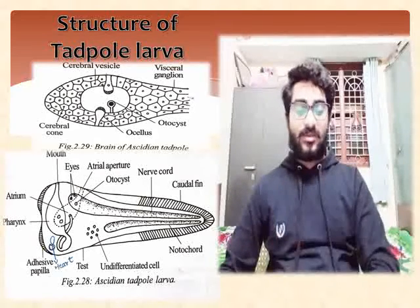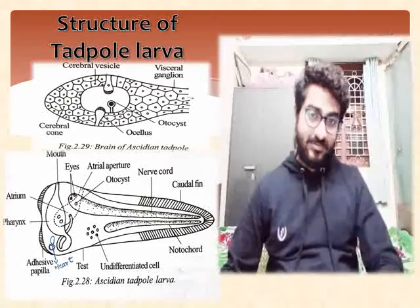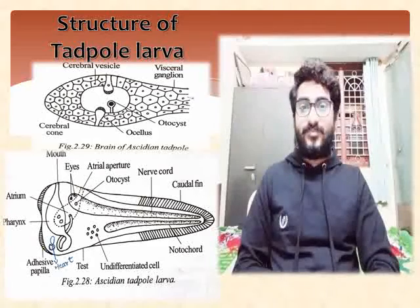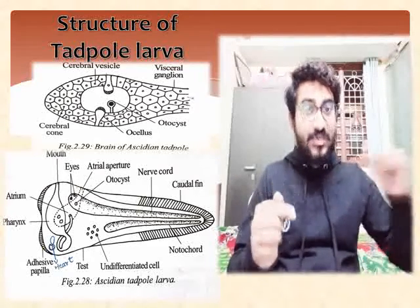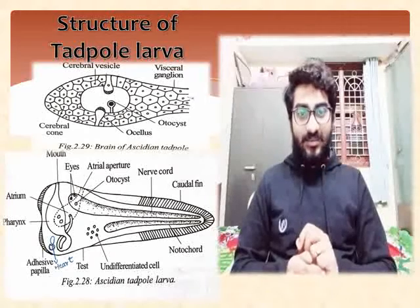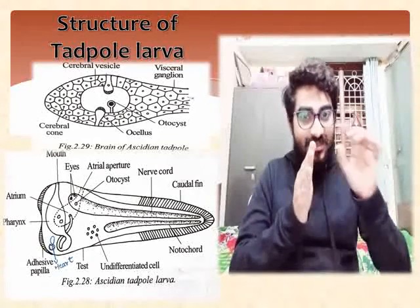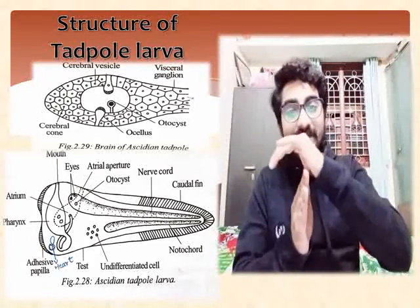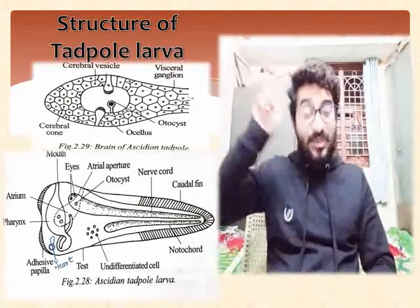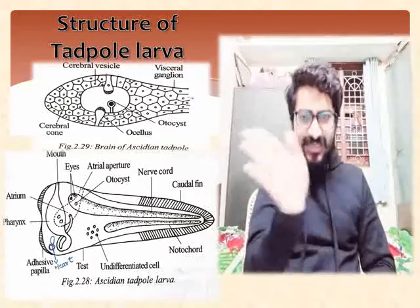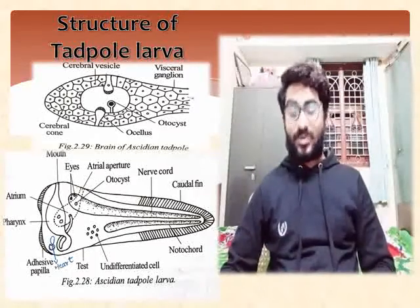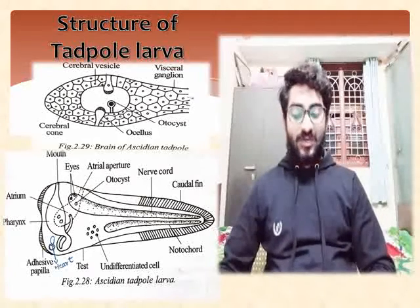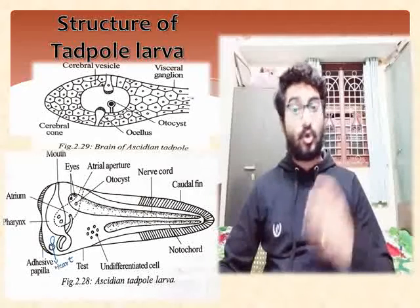The anterior end of the tubular nerve cord extends into the trunk. The posterior part extends towards the tail. The anterior part of the nerve cord is bulged, and this anterior part bulges to form the so-called brain.